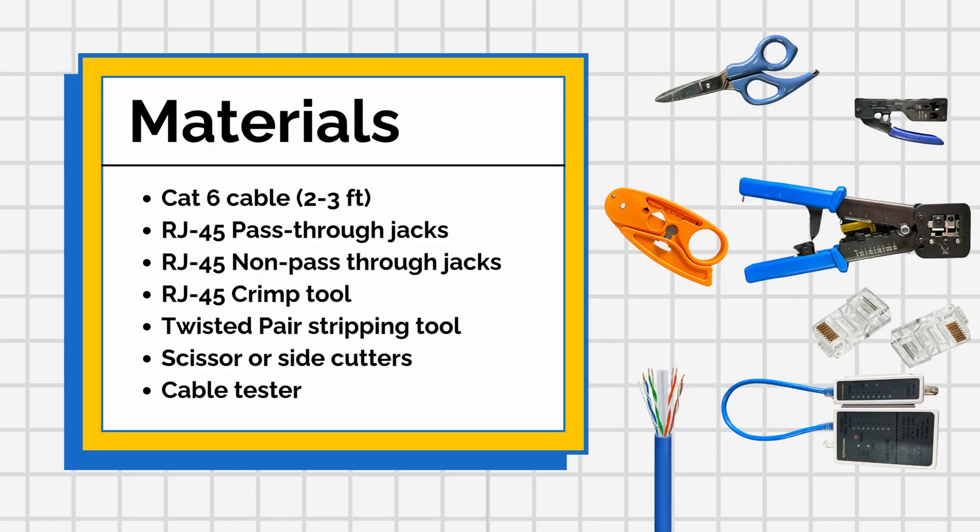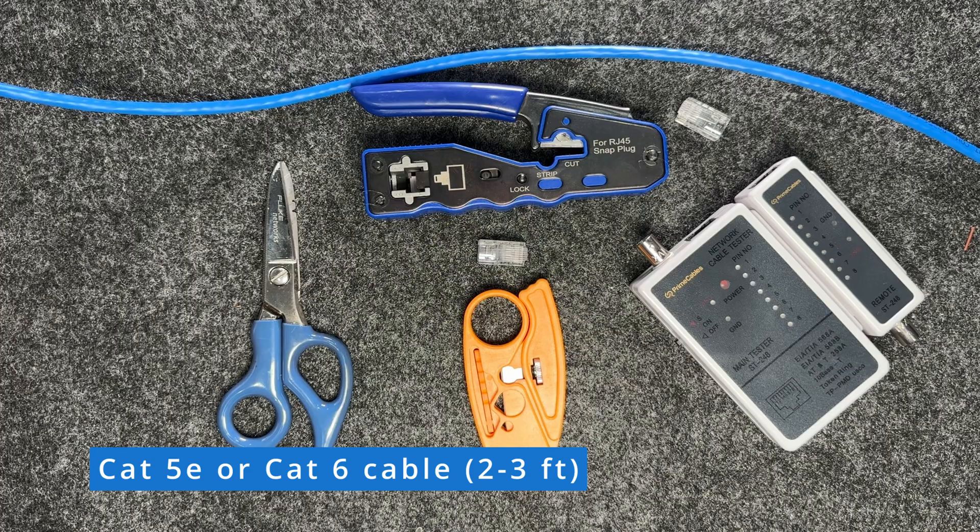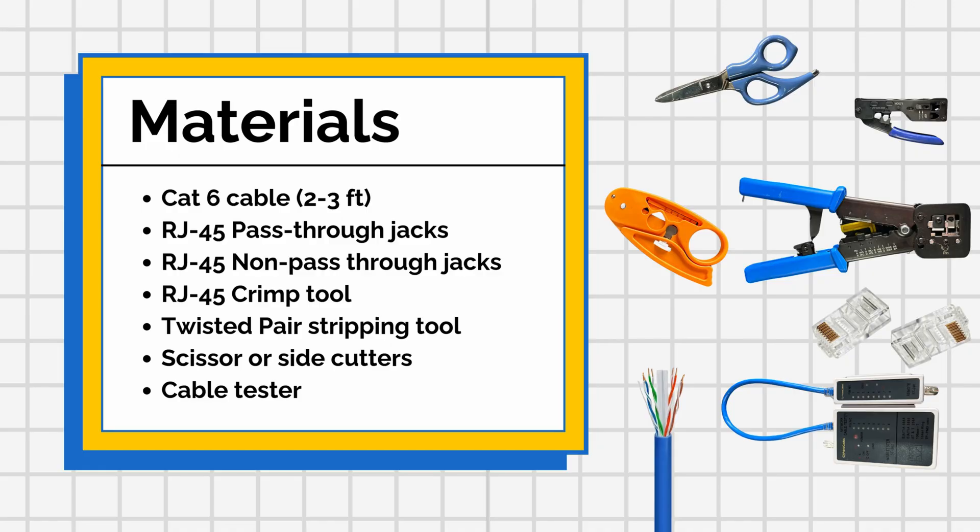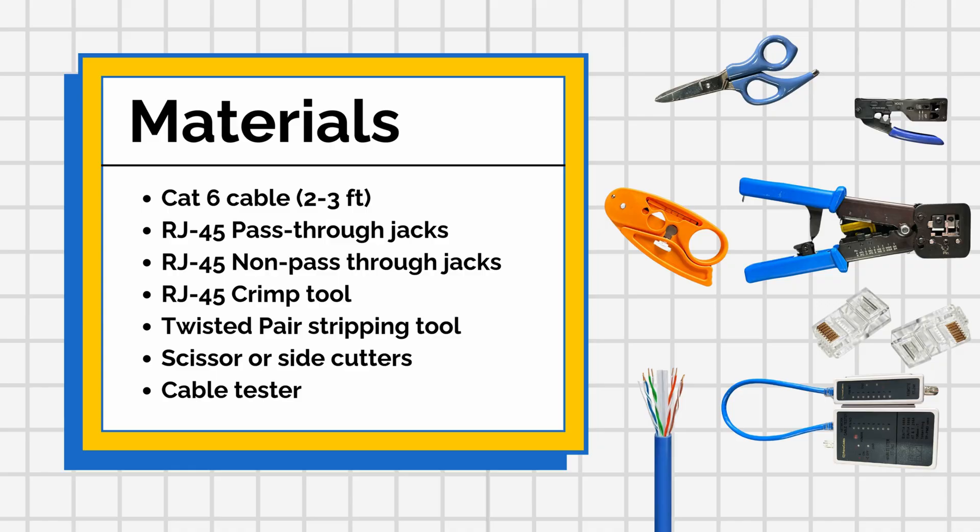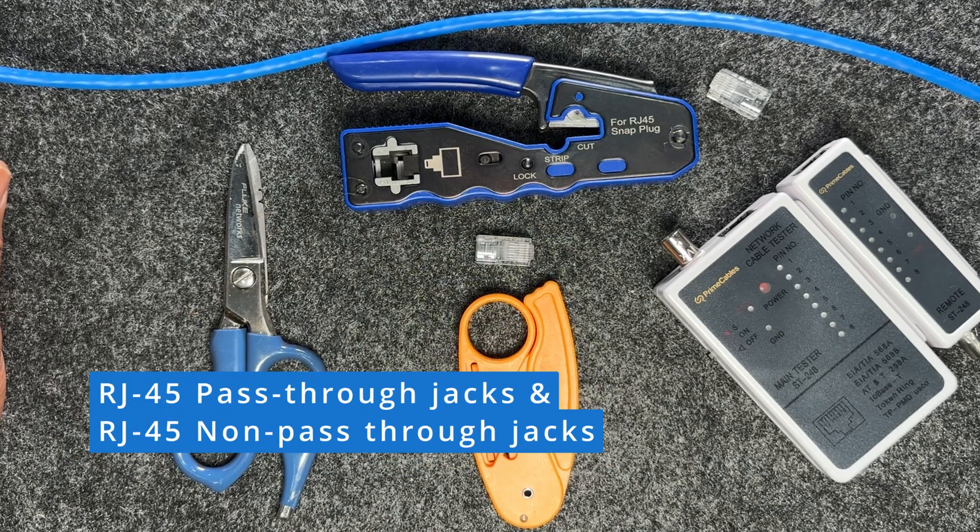The materials we need for this lab include any category cable you want to make your patch cable from. We're using category six cable, about two to three feet. We also need two RJ45 crimps.